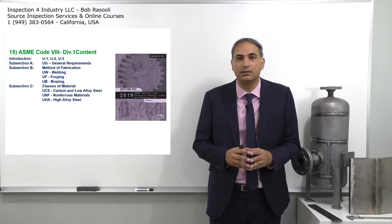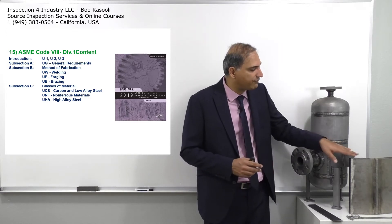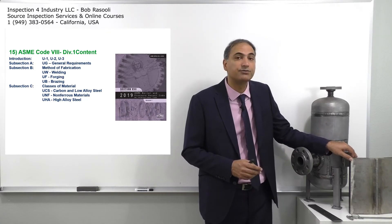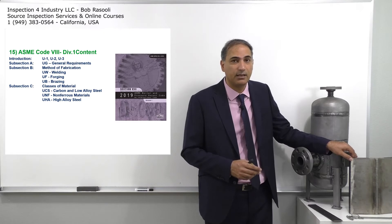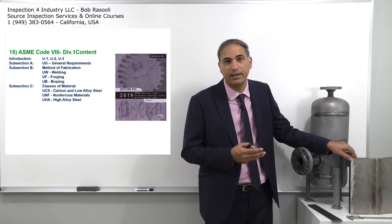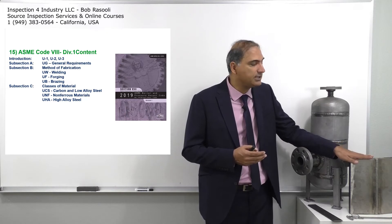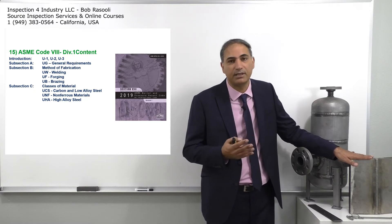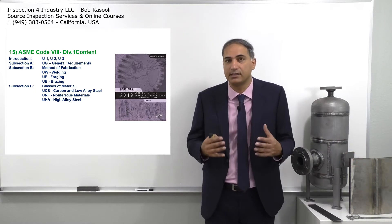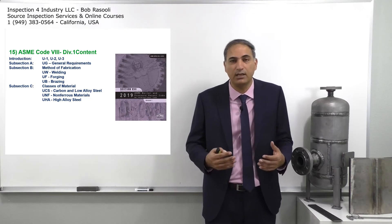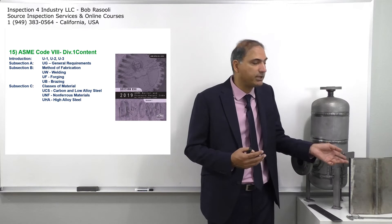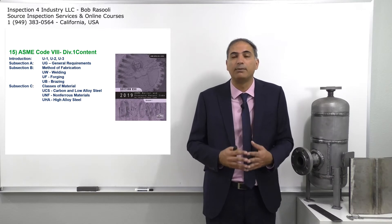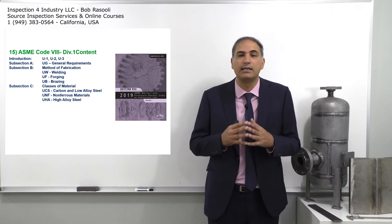High alloy steel falls under UHA. For example, SA-240 TP316 is a stainless steel plate with 18% chromium and about 8% nickel, which classifies it as high alloy steel. If you want to make a pressure vessel from stainless steel — rolling that plate and welding — you must also follow the UHA requirements.